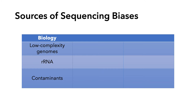The first source of sequencing bias is simply biology. For example, low-complexity genomes are harder to sequence because the sequencer relies on variation to call bases. Another biological source is ribosomal RNA, which is commonly found in RNA-seq libraries and may need to be removed. A third is contaminants — for example, symbiotic bacteria or parasites.